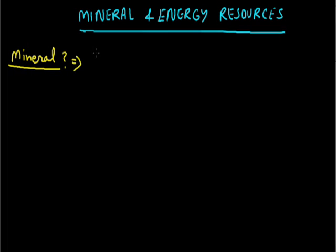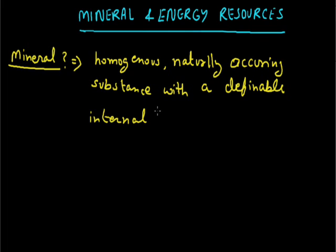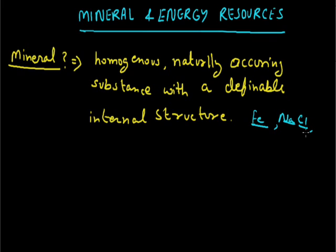Now the question is: what is a mineral? A mineral is a homogeneous, naturally occurring substance with a definable internal structure. According to geologists, minerals occur in nature and they all have a definite chemical composition. For example, iron and sodium chloride — made of sodium and chloride — are examples of minerals. Rocks are combinations of homogeneous substances called minerals, and minerals are basically found in rocks or under the surface of the earth.